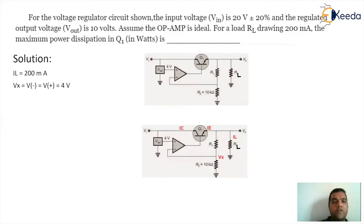So since Vx is 4 volt, the value of IR2 current, that is the current flowing through R2 resistor, will be Vx by R2 which is 0.4 milliampere. So the value of emitter current will be the current IR2 plus IL, because whatever current flows through R1 will flow through R2 also, because no current will flow inside the op-amp. So the emitter current is splitting into two parts: IR2 and IL. Since IL is 200 milliampere and IR2 is 0.4 milliampere, the total emitter current is 200.4 milliampere.